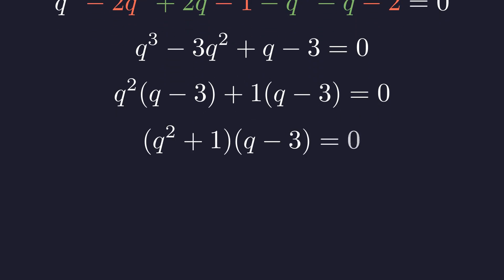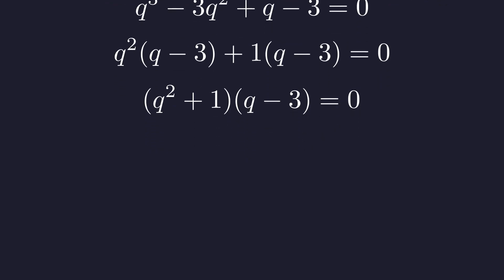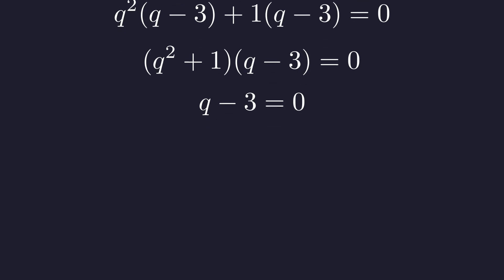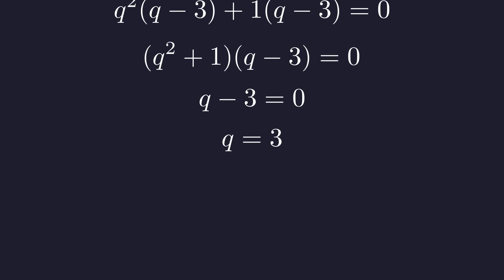This results in the product of q squared plus 1 and q minus 3 being equal to 0. Since q is a prime number, q squared plus 1 is always positive. This implies that the only way for the product to be 0 is if the other factor is 0. This gives the unique solution, q equals 3.